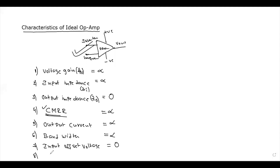Input offset voltage is nothing but zero. Next characteristic: slew rate. Slew rate is also infinity. So these are the characteristics of the ideal operational amplifier. Output impedance is zero, common mode rejection ratio is infinity, output current is infinity, bandwidth is infinity, input offset voltage is zero, and slew rate is also infinity.